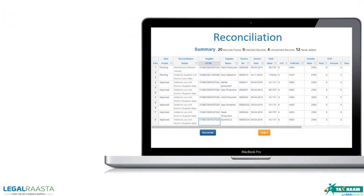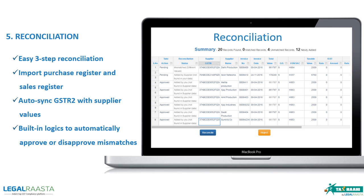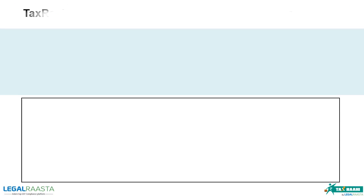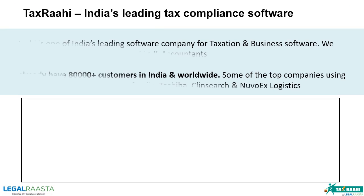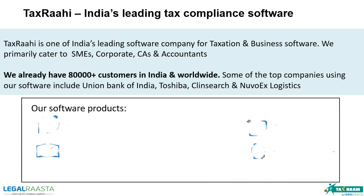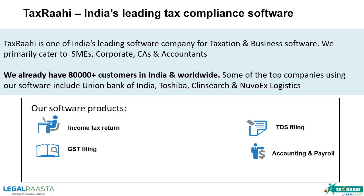Easy 3-step reconciliation to import purchase and sale register, auto-sync values into GSTR2 from supplier, and automatically approve or disapprove mismatches. You can check out our website to get an insight into our software products, which cater to 80,000 plus customers across the globe including top MNCs.